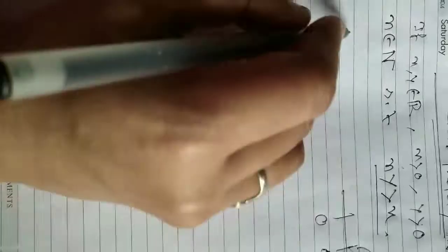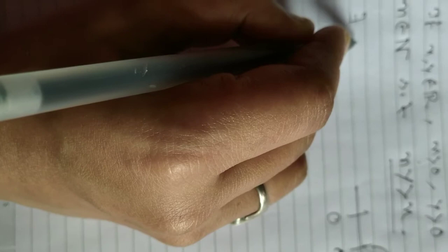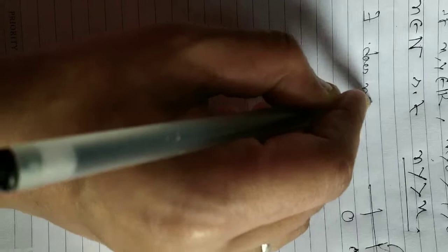There does not exist such a natural number n belonging to ℕ such that ny greater than x. Suppose this is not possible — that is, there does not exist a natural number n such that ny greater than x.